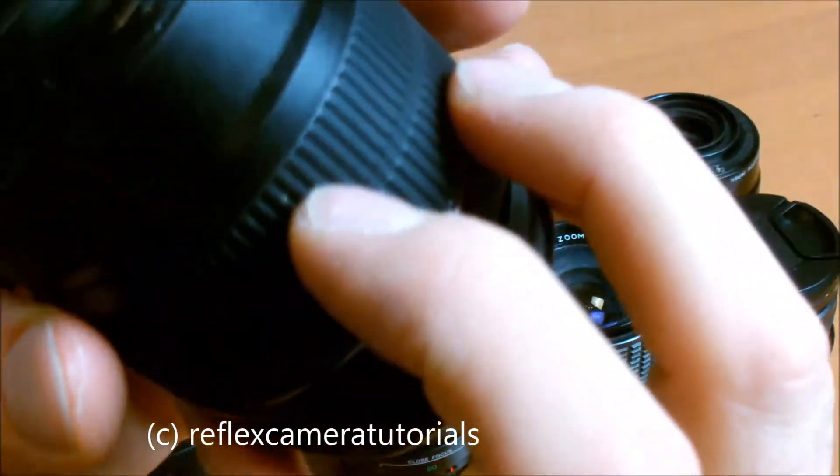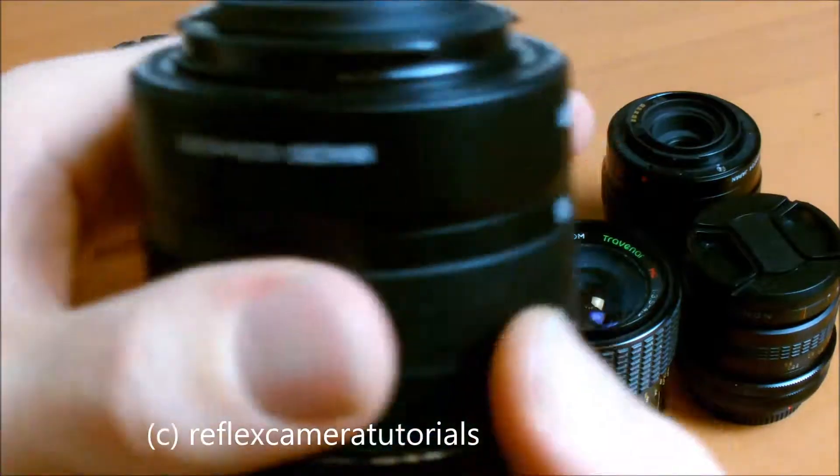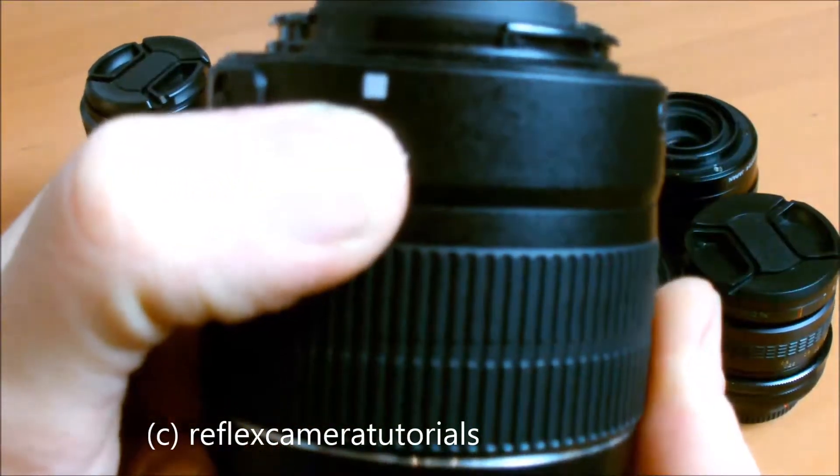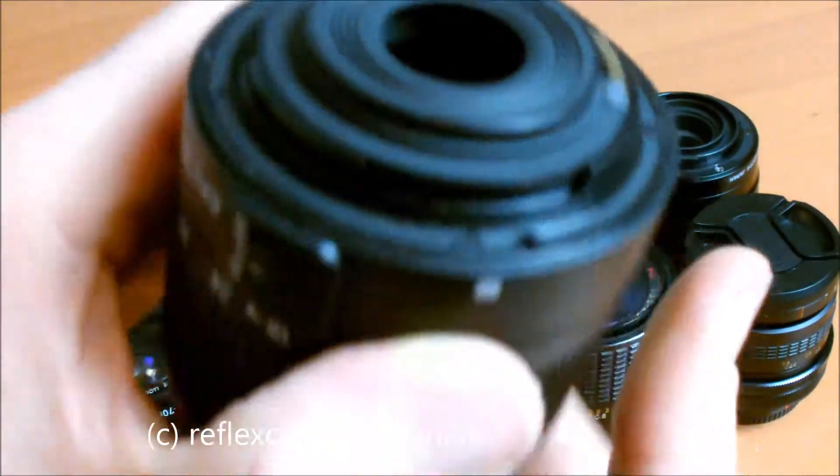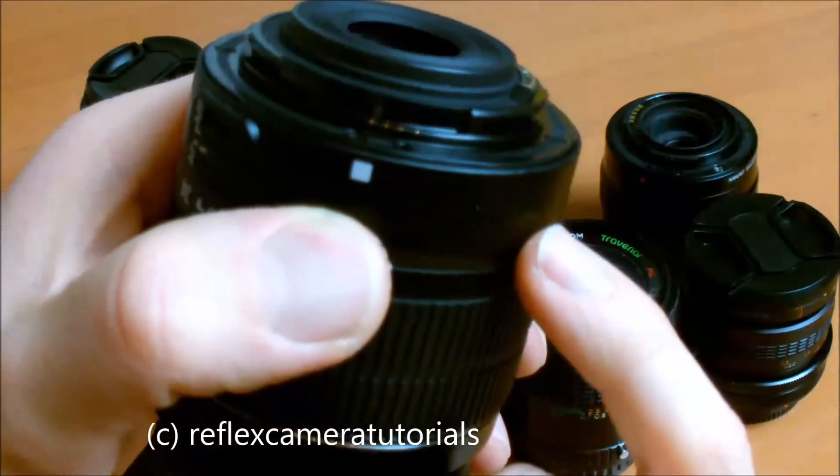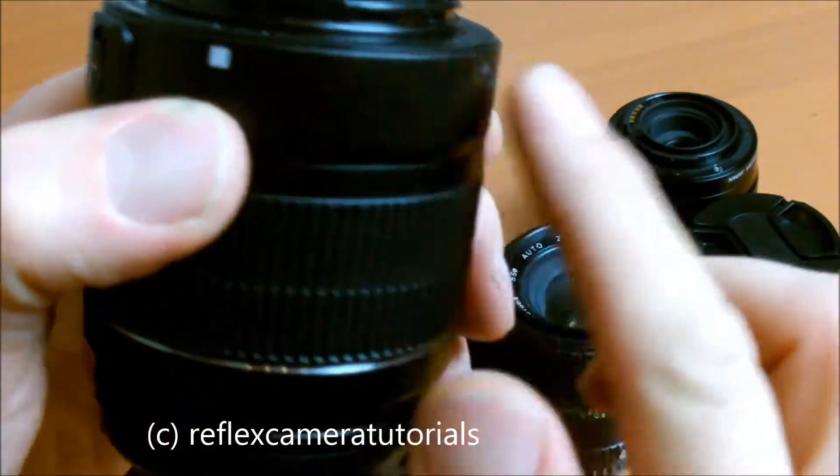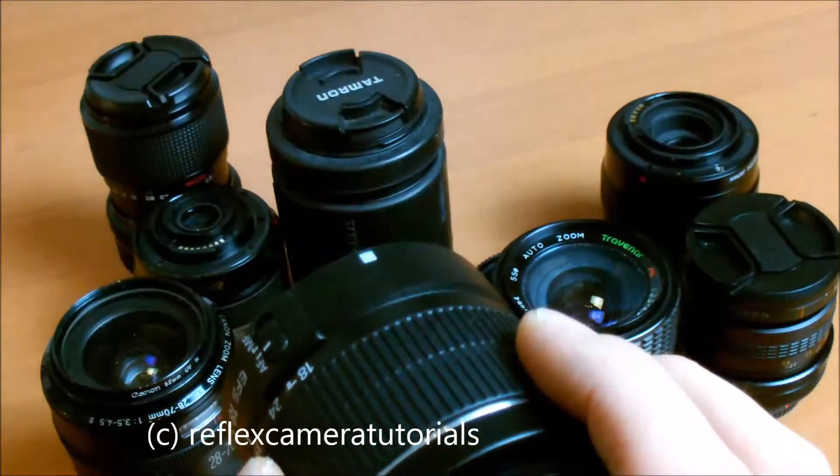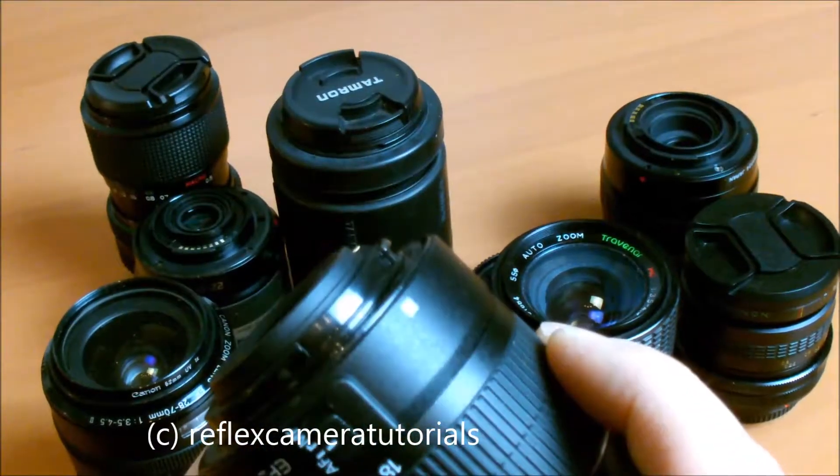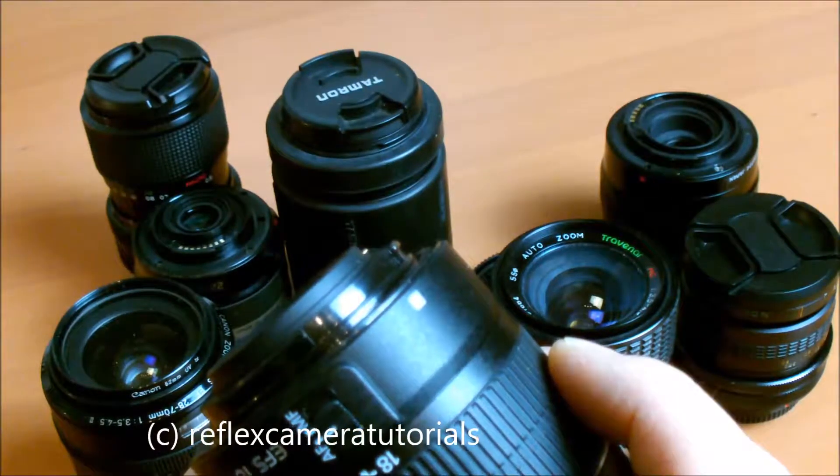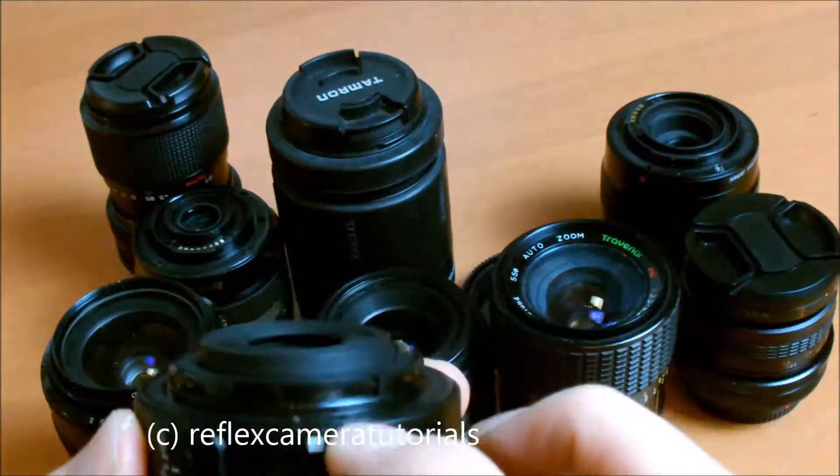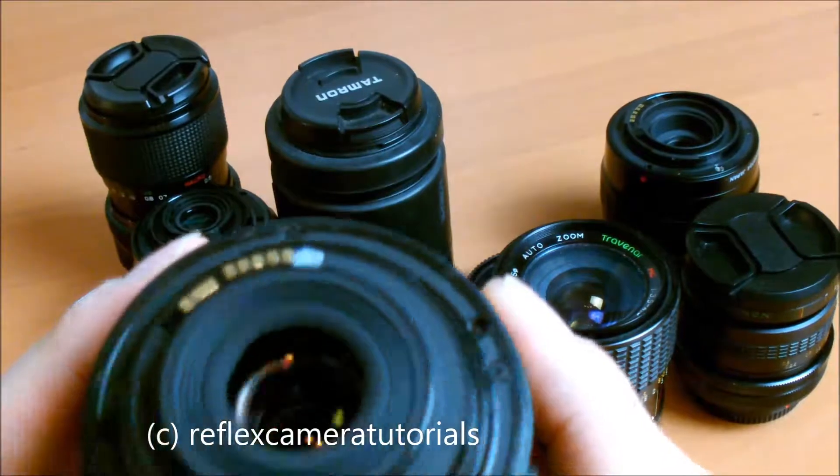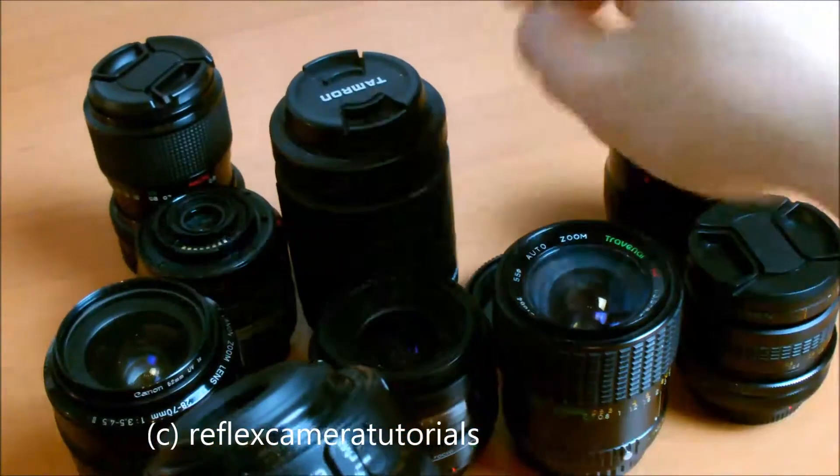So EF lenses have both, almost every time both. This one has only the white square. Some lenses also have a red dot, but of course not those EF lenses. The camera has the red dot so you can mount both on a modern single lens reflex camera from Canon. This one has the white square but looks almost like the EF lens.